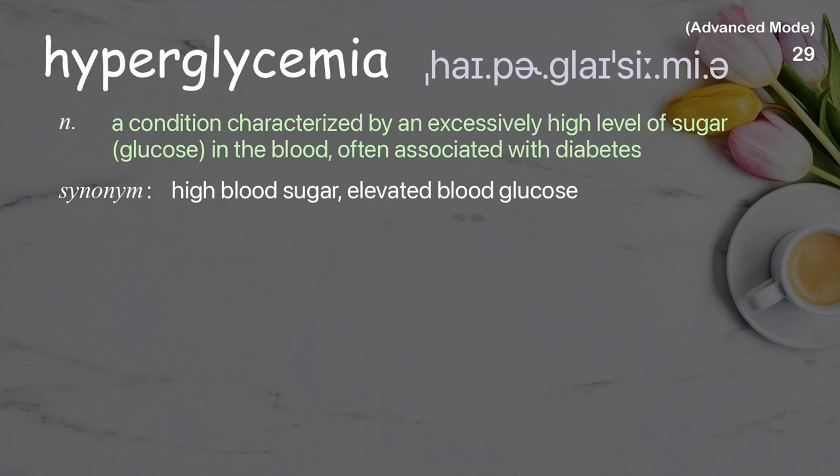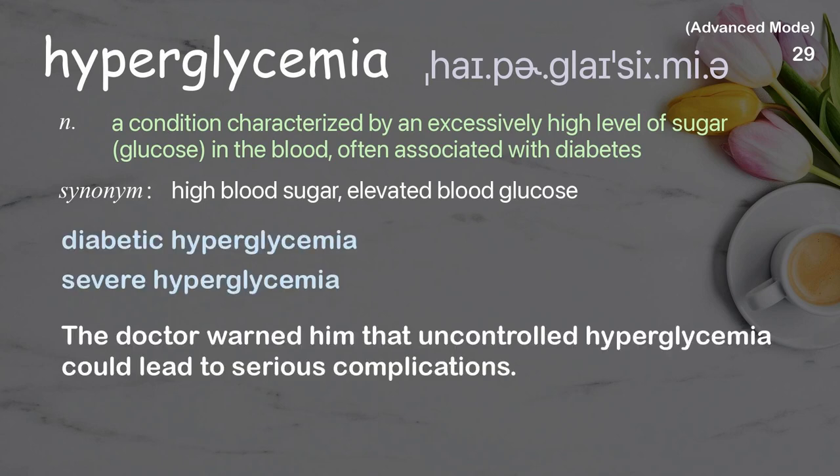Hyperglycemia: a condition characterized by an excessively high level of sugar (glucose) in the blood, often associated with diabetes. Examples: diabetic hyperglycemia; severe hyperglycemia. The doctor warned him that uncontrolled hyperglycemia could lead to serious complications.